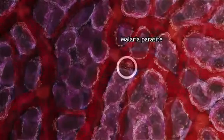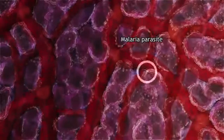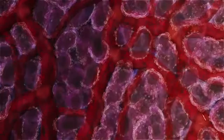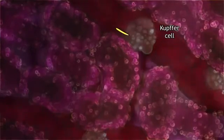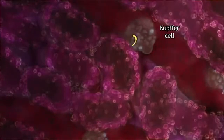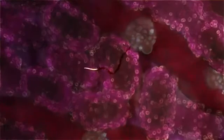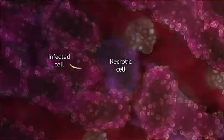Sensing its arrival at the liver, the parasite searches for an exit. A sentinel Kupfer cell is the entry point to liver tissue. Leaving the blood, the parasite infects a liver cell, killing one or more other cells on its way.